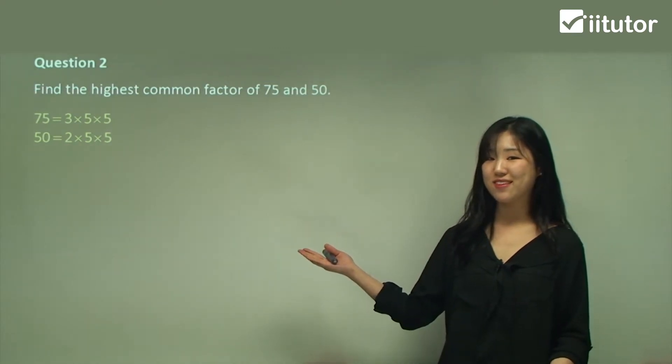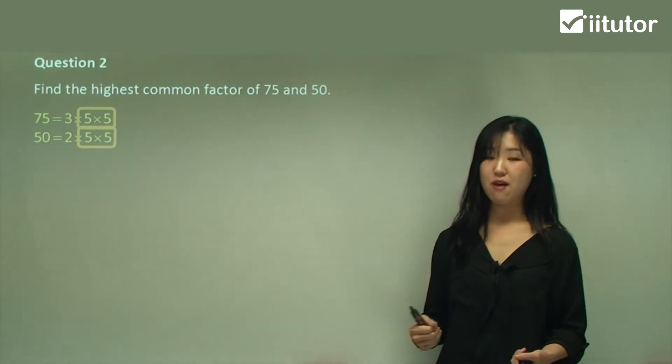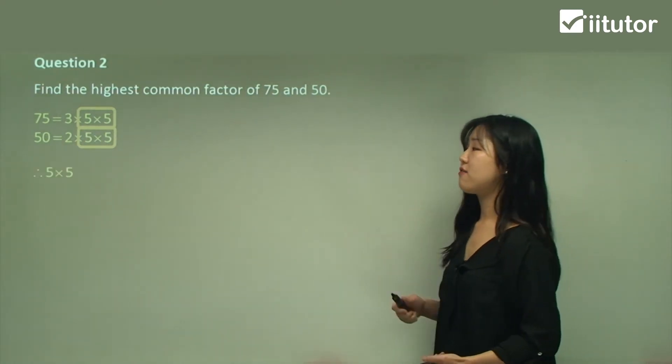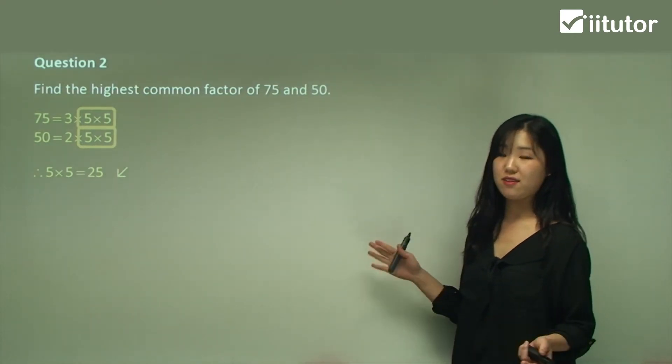You can see what's the same. 5 times 5 and 5 times 5 are both in 75 and 50. So 5 times 5 is the highest common factor. Simplify it - it becomes 25.